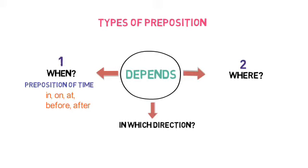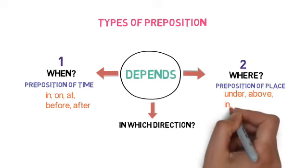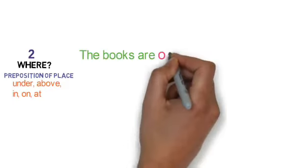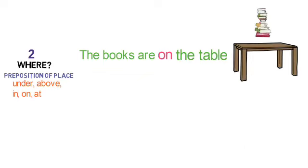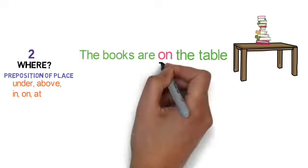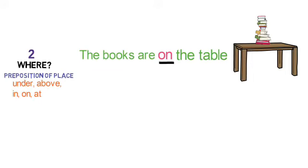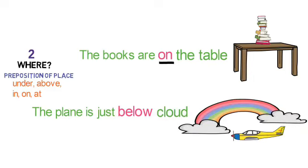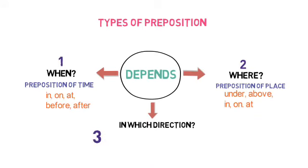Now we are going to know about the second type — the preposition that deals with place or location — so its name is preposition of place. Examples are: under, above, in, on, at. For example, 'The books are on the table' — 'on' shows the position of the books. Another example: 'The plane is just below the cloud' — 'below' is an example of preposition of place.